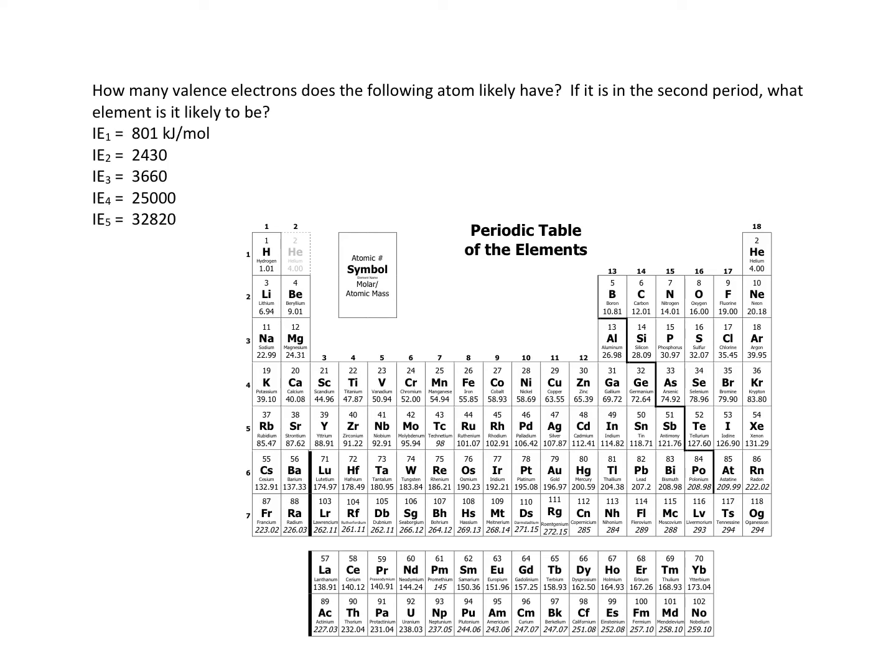All right, in this video we're going to look at what happens when you pull more than one electron off an atom. So if you've watched the ionization trend video, you understand what ionization energy is, but then we look at, okay, that is the first ionization energy, that's when you pull one electron off.